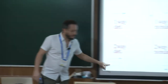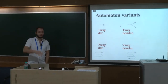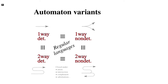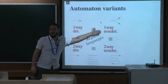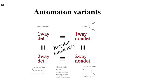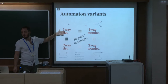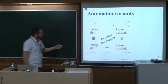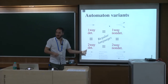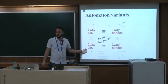In the two-way model, you can scan the input several times. You also get non-deterministic versions. The crossing sequence construction allows you to get rid of two-wayness: you guess a tuple of transitions that occur at the same position in the input, possibly at several moments in computation time.